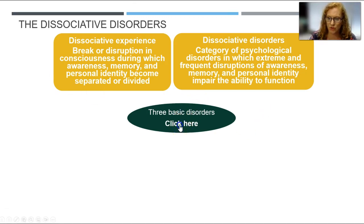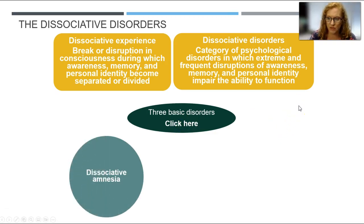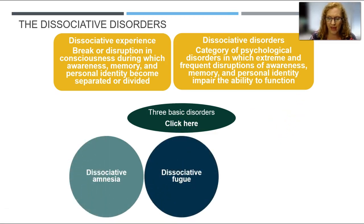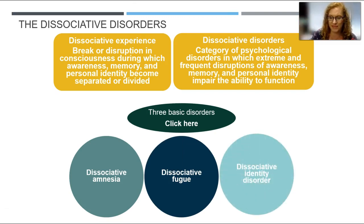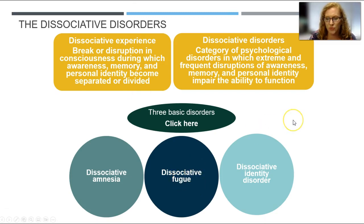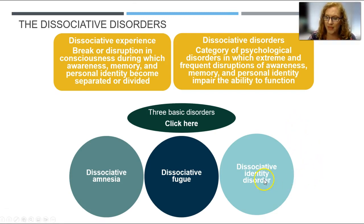There are three basic disorders to look at. One is dissociative amnesia, where we have amnesia not because of a bump on the head or something physical in the brain, but because of such an upsetting experience that we dissociate from our memories. There's dissociative fugue, where there is amnesia and you travel, leaving where you were living and starting a new life somewhere else. And finally, there's dissociative identity disorder, where personal identity is disrupted.